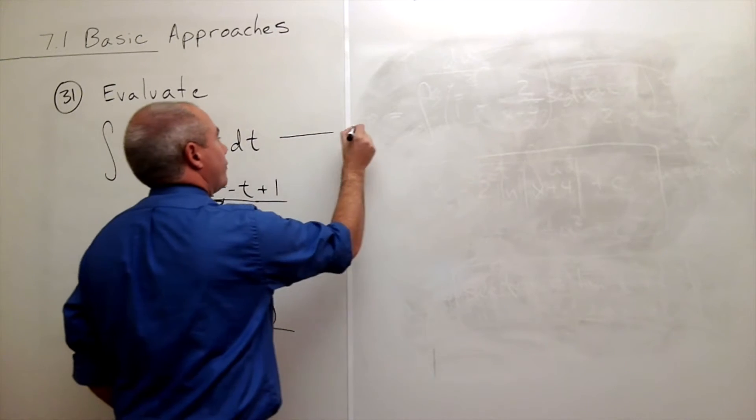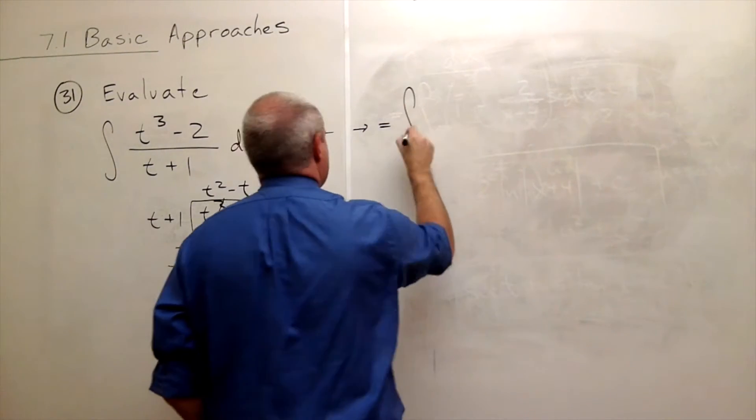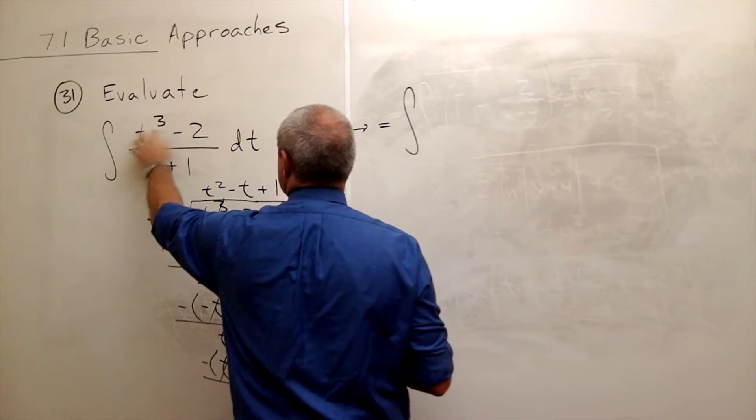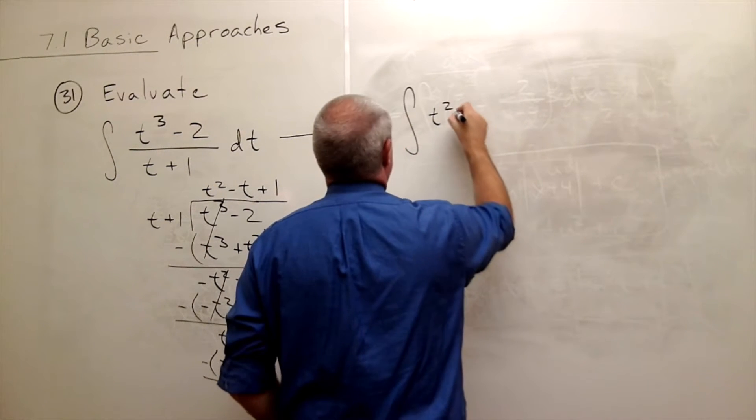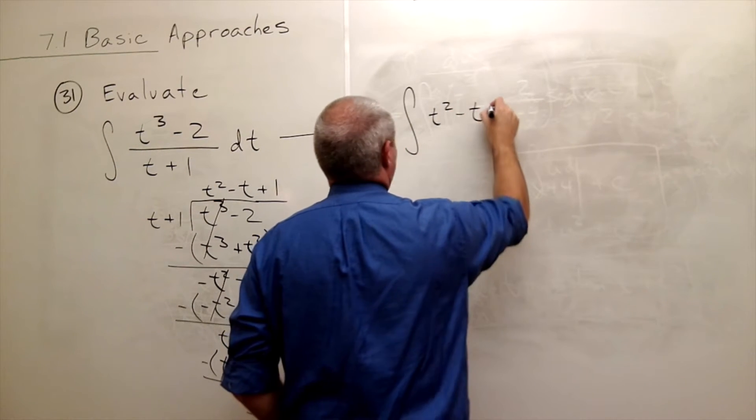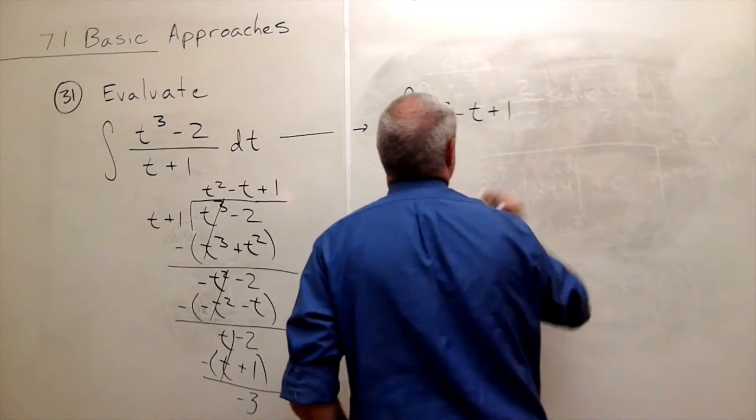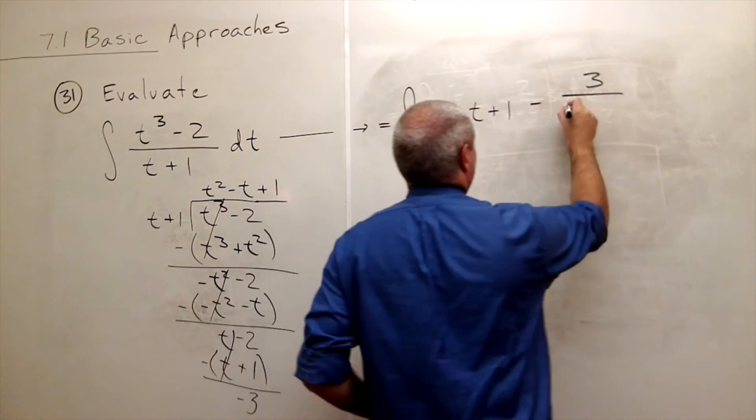So now how do I rewrite this integral? So now I can rewrite it as, well it went in evenly, t plus 1 went evenly into t cubed minus 2, t squared minus t plus 1 times. And then there was a remainder of minus 3 and I need to divide that by t plus 1.